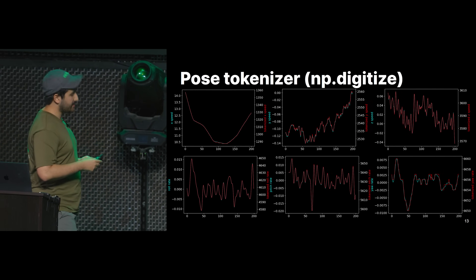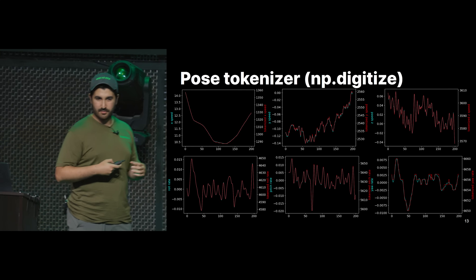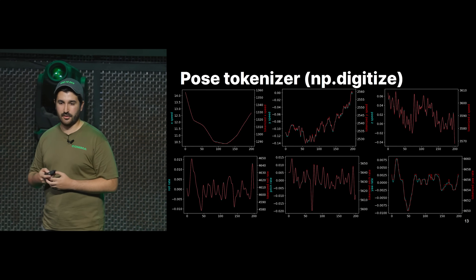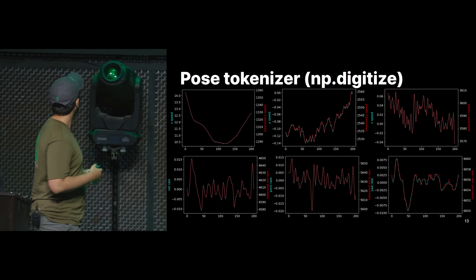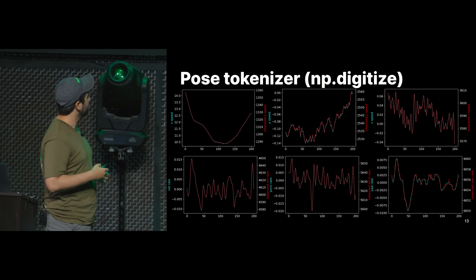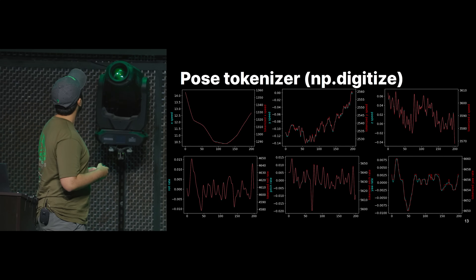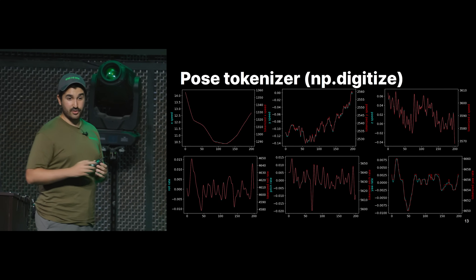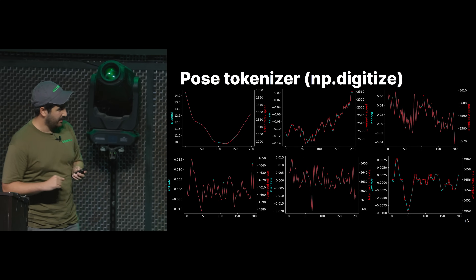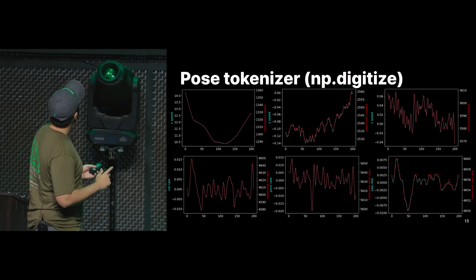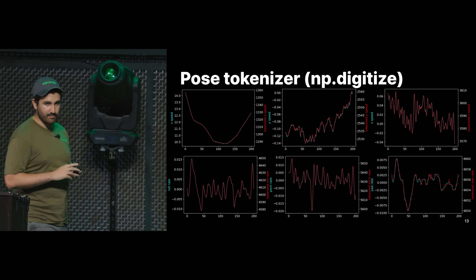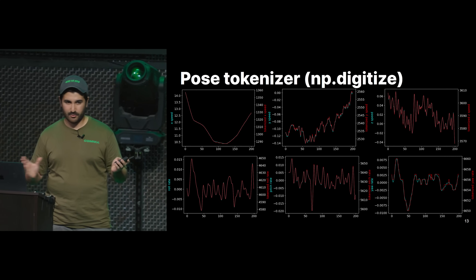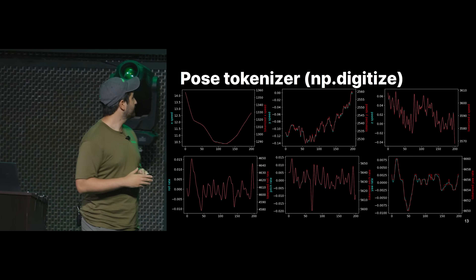What's a pose tokenizer? A pose is basically six floating point numbers — six degrees of freedom: your X speed, Y speed, Z speed, and then your roll rate, pitch rate, and yaw rate. We also need to tokenize these numbers because of the next component I'm going to talk about. We tokenize them with a very simple tokenizer — we just digitize them with uniform binning.